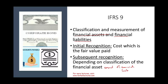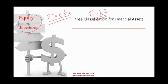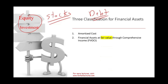The question is how we classify a financial asset and a financial liability. For financial assets, we have three categories: amortized cost, financial asset at fair value through other comprehensive income (FVOCI), and financial asset at fair value through profit and loss (FVPL). We will go through each category and work examples.